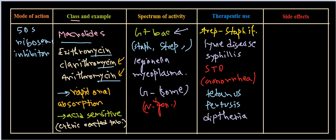One important thing: macrolides are 50S ribosome inhibitors and they will not kill the bacteria — they are bacteriostatic. That means they stop or halt the growth of bacteria but do not kill them. If an infection is thriving rapidly and we need the bacteria killed, we cannot use macrolides. Macrolides are appropriate only when slowing bacterial growth is sufficient for the immune system to handle the infection. If rapid elimination is needed, we must use bactericidal antibiotics.